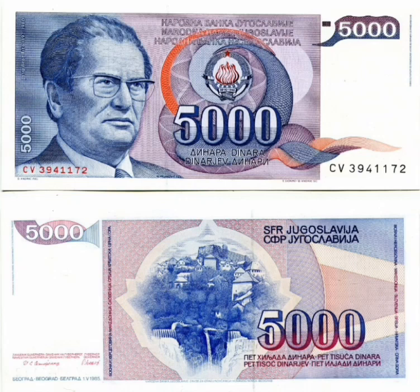A new banknote of 5,000 dinars was to be introduced to represent Yugoslavia. The largest banknote was to be issued first, and then smaller denominations would be gradually replaced.